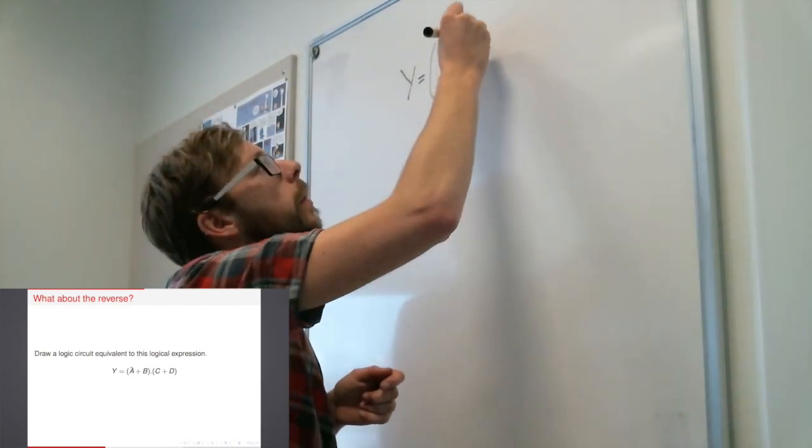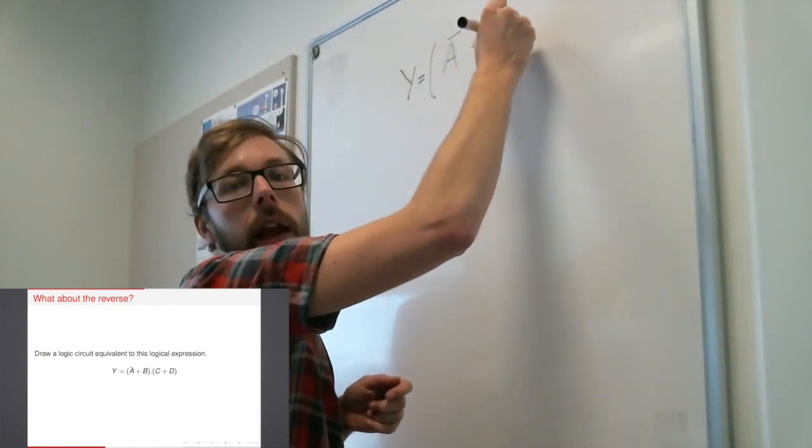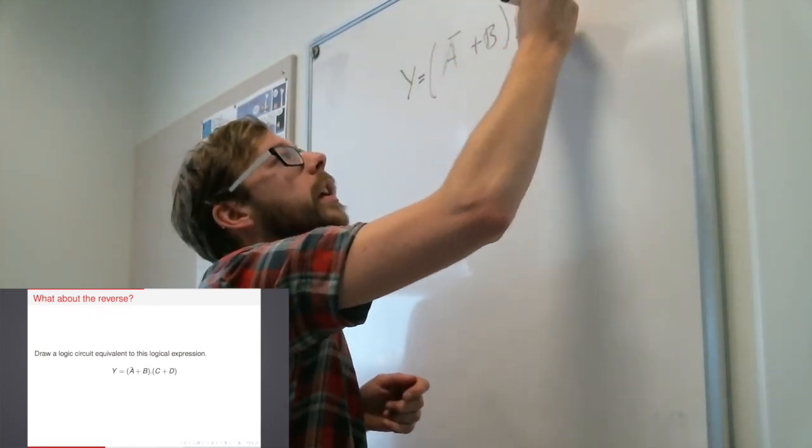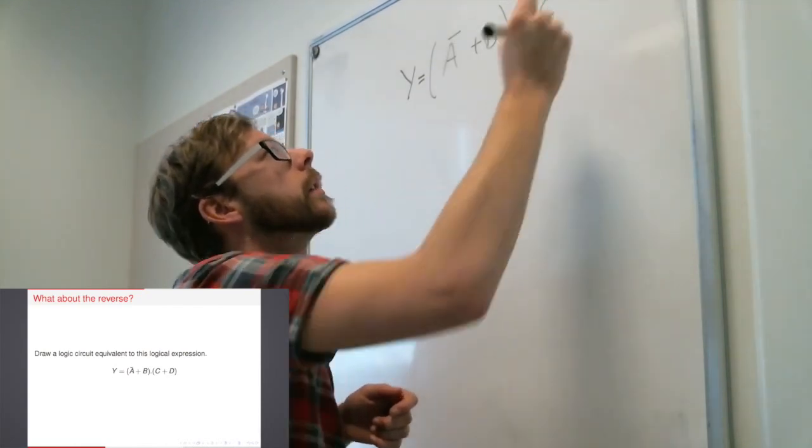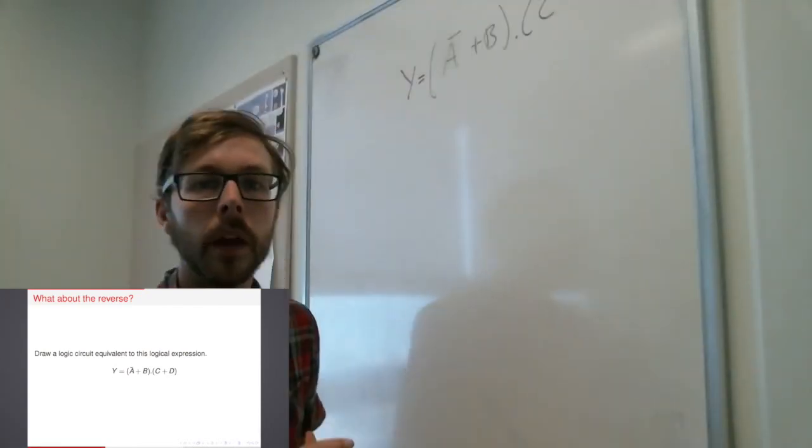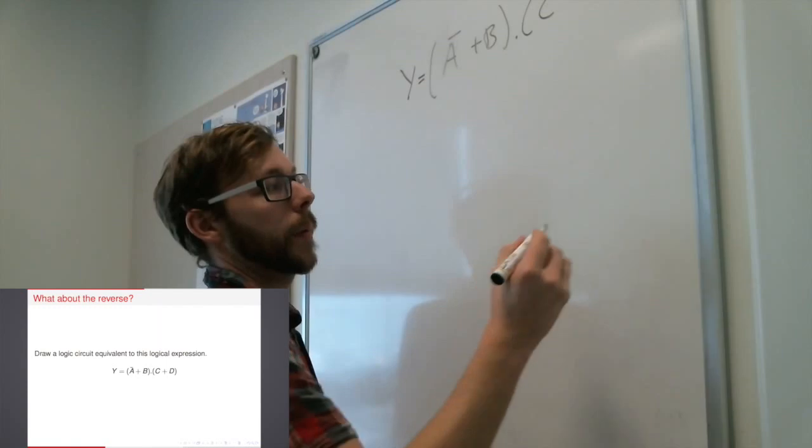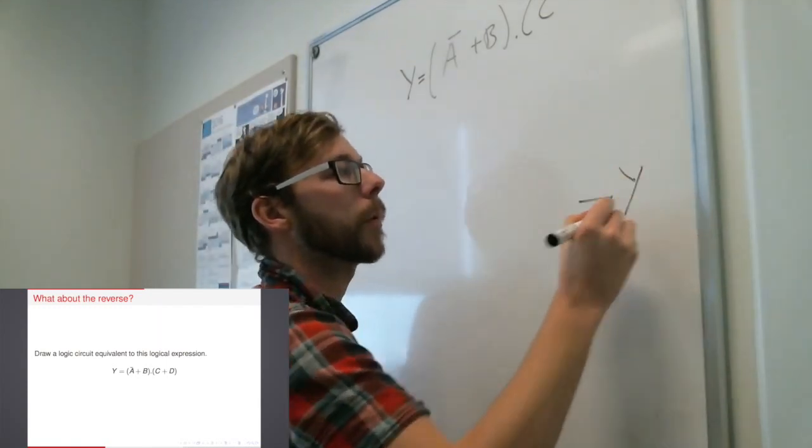So here's my expression to start off with. It's NOT A or B AND C or D. Okay. Oh, hideous. Okay. So once again, I start from the back end. So my output is going to be Y.